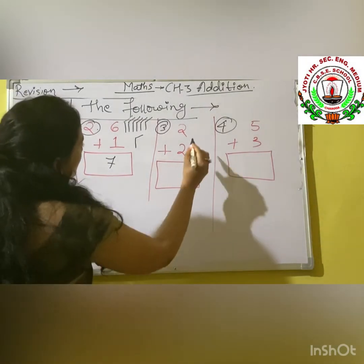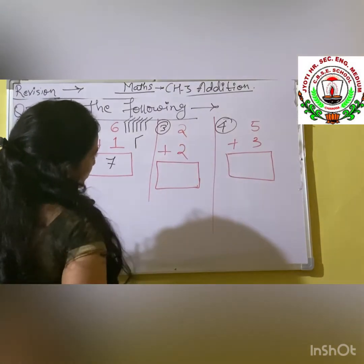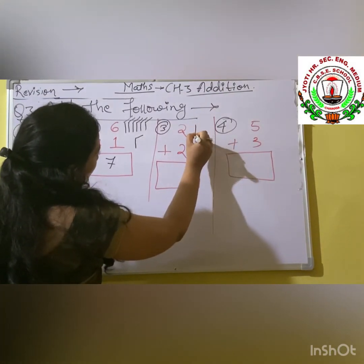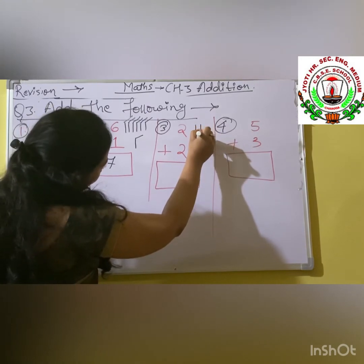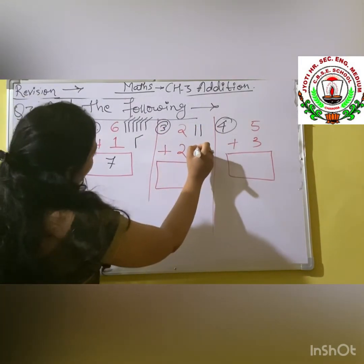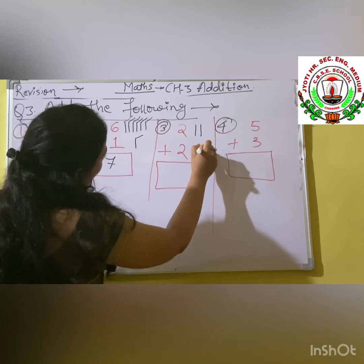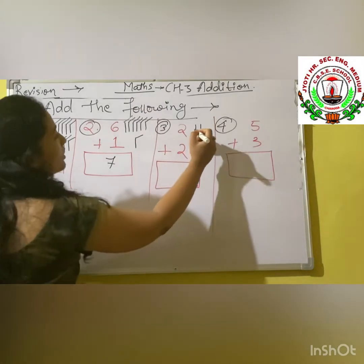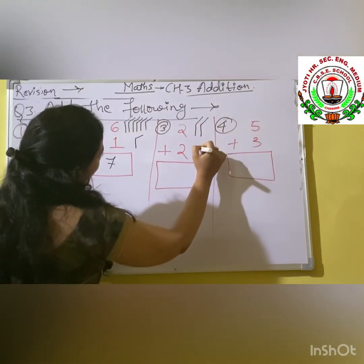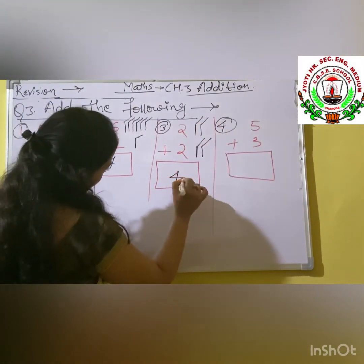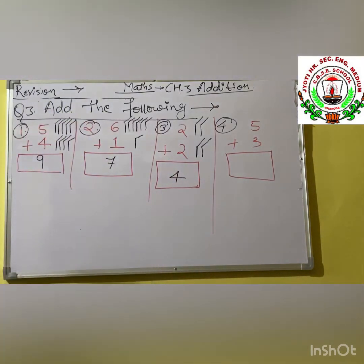Next one is 2 plus 2. We draw 1 stroke and 2 strokes, then here also 1 and 2. Now we count together: 1, 2, 3 and 4. Our answer is 4.